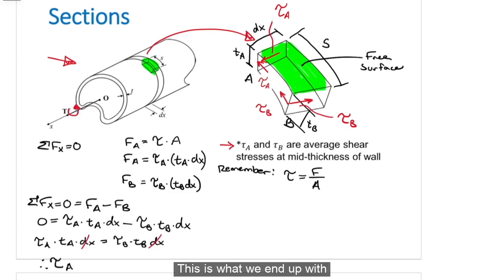Then we can continue with our summation of forces in the x direction. This is what we end up with, and we can see that the shear stress and thickness at A is equal to the shear stress and thickness at B. The product of the shear stress and the thickness of the tube is the same at each location on the cross section and is called shear flow. Therefore, at all locations, Q is constant and is equal to tau times T.